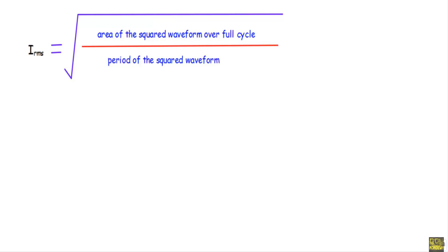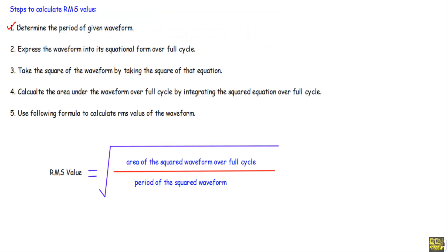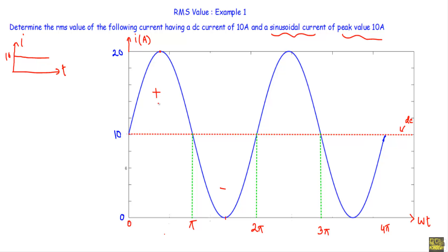To calculate I_RMS I will follow five steps. First, I will determine the period of the given waveform. The waveform has a positive half cycle and a negative half cycle within the zero to 2π interval. Within this interval the waveform repeats in upcoming cycles — from 2π to 3π is the next positive half cycle, and from 3π to 4π is the next negative half cycle. Therefore, the period T is equal to 2π.